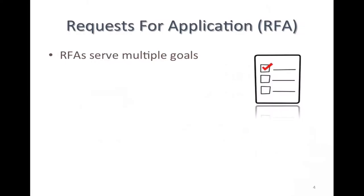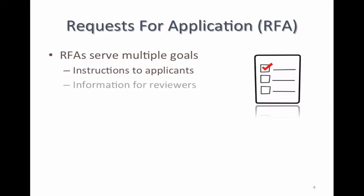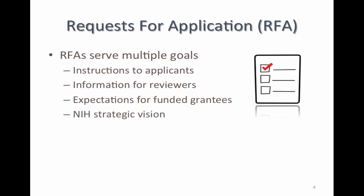RFAs serve multiple goals, so when you hear us answer questions, we may be answering from a number of different perspectives. First, they are instructions to applicants. They also serve as guidance to reviewers — there is information and criteria for reviewers to consider as they evaluate applications. For grantees funded as part of CSER II, there are terms and conditions and expectations. The high-level goals of NIH, NHGRI, NCI, and NIMHD are folded in, as well as a descriptive history of CSER I, which is currently wrapping up.